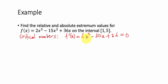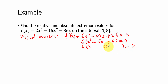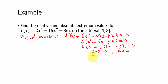Set f'(x) equal to 0. Factor out 6: we have x² − 5x + 6 = 0. We need to find the zeros. We get (x − 2)(x − 3) = 0, since 2 times 3 is 6 and 2 plus 3 is 5 — both negative. So x − 2 = 0 gives x = 2, and x − 3 = 0 gives x = 3.